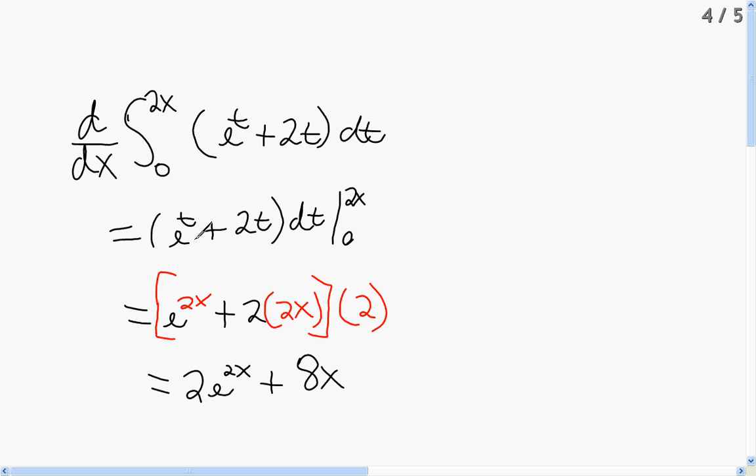The function e to the t plus 2t dt tested from 0 to 2x. So now this is just like we've been doing, this is basically the same stuff. We plug in 2x in for t minus 0 in for t. So here we plugged in 2x, so now I'm gonna have e to the 2x because that's t, plus 2 times the t which we said we're plugging in.